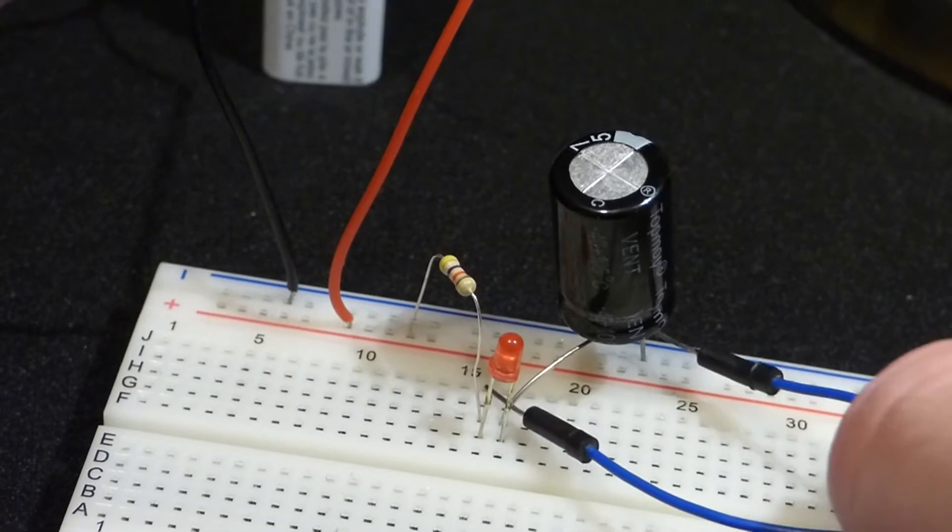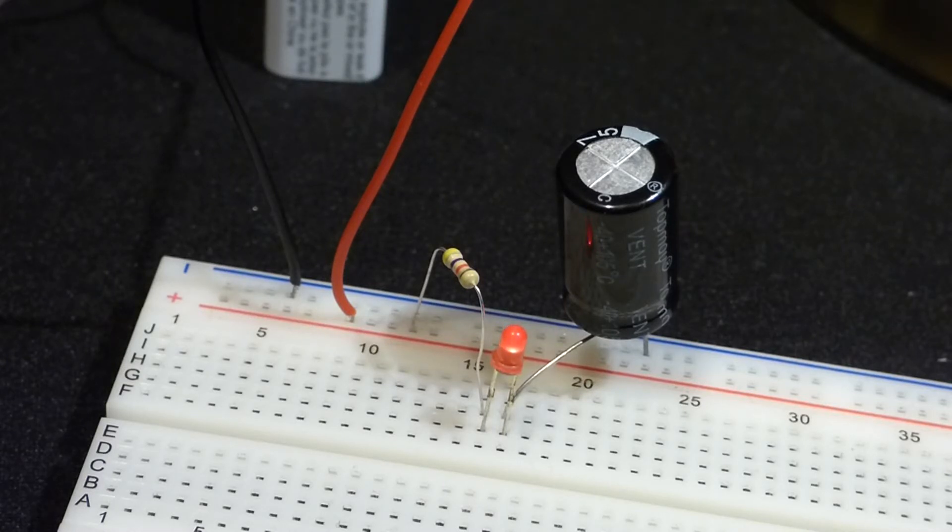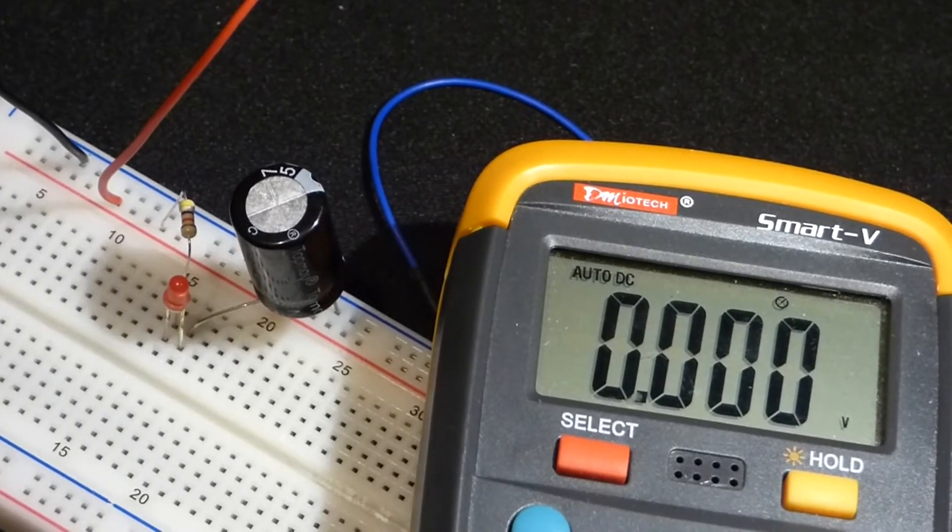We'll discharge it quickly by shorting it out, and now you can see the LED came on because while the capacitor charges it takes current. You see the LED get more dim because as the capacitor gets more charged, as the voltage across the capacitor increases, the current decreases.